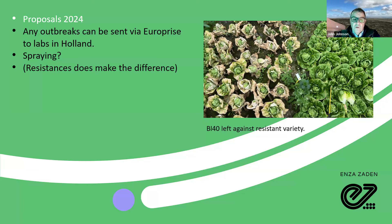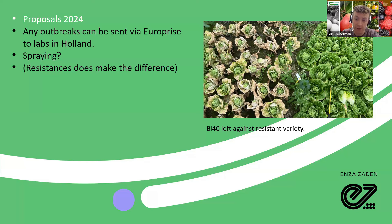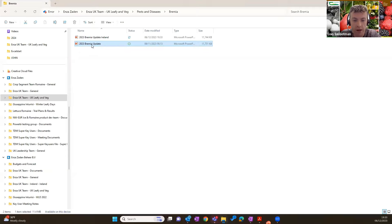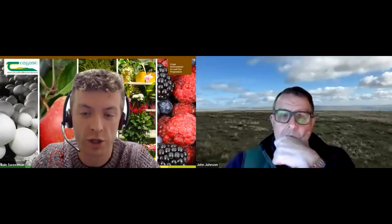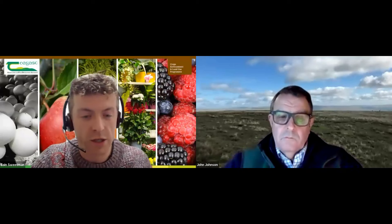Thanks very much, John. Lots of challenges for a plant breeder. The combination of spraying, plant protection programs, resistant varieties, and other factors is something we'll touch on later. Everyone, please send questions into the Q&A at the bottom. We're going to our second speaker now — Andrew Poole. Andrew studied at Ritte Agricultural College in the early nineties before returning to the family farm where a wide range of veg and salads were being grown.